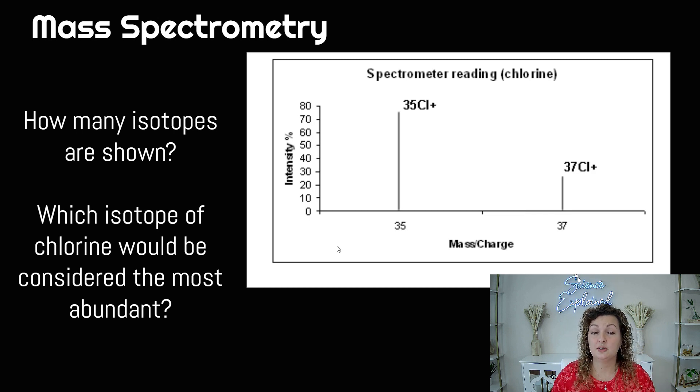They are chlorine-35 and we have chlorine-37. So those are the two isotopes that we're looking at here. Which isotope of chlorine would be considered the most abundant? Well, we have intensity percent and we have the mass and the charge. So we need to look for which line is the tallest.